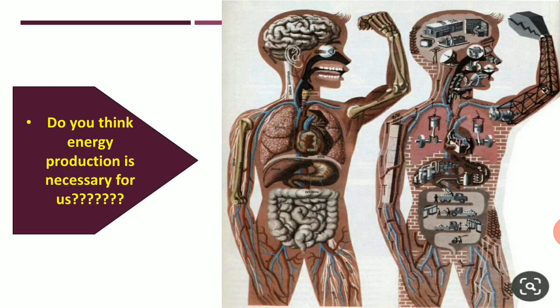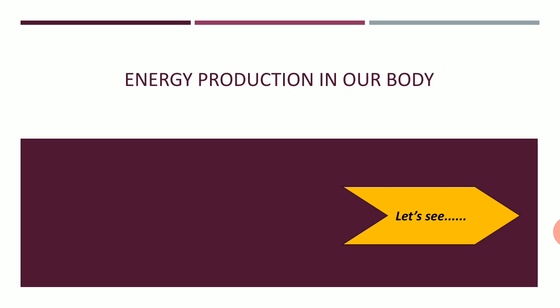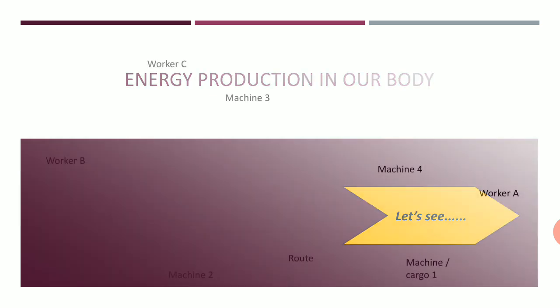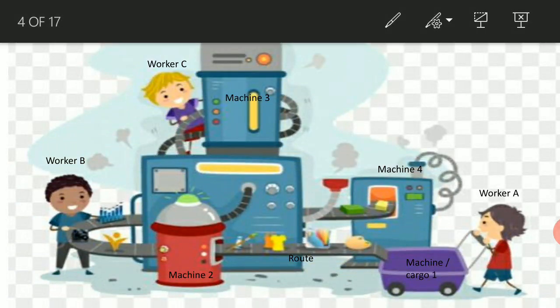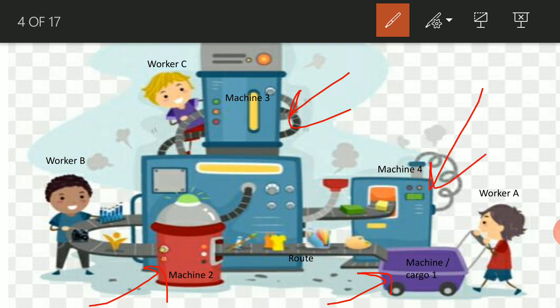Today we will discuss energy production in our body. Now, look at this picture of a production house. In this picture, there are different types of machineries and many workers. There are several machines: machine one, machine two, machine three, and machine four. And there are many workers: worker A, worker B, worker C.